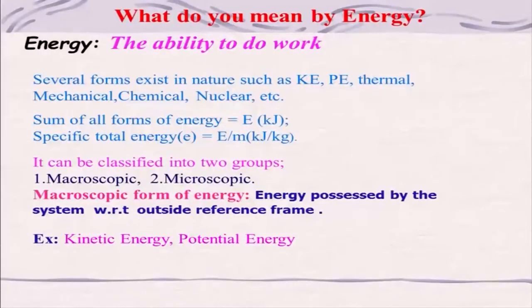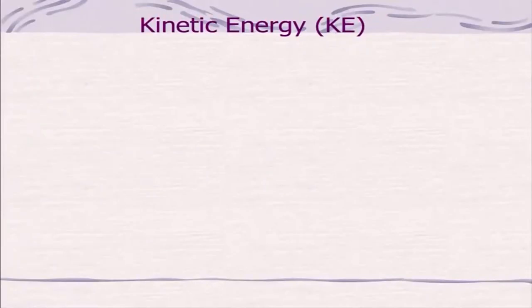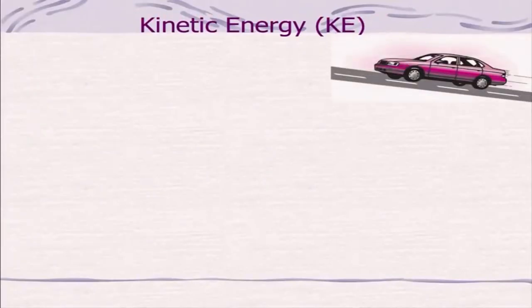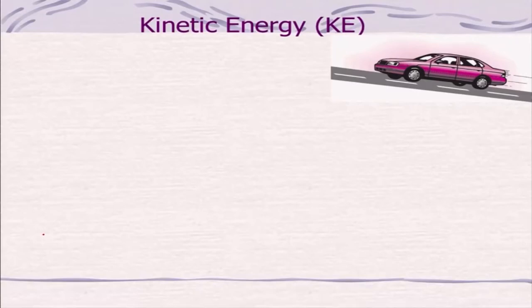The common macroscopic forms of energy are kinetic energy and potential energy. Let us look at kinetic energy and take an example. Let's say a car is moving with a certain velocity V.